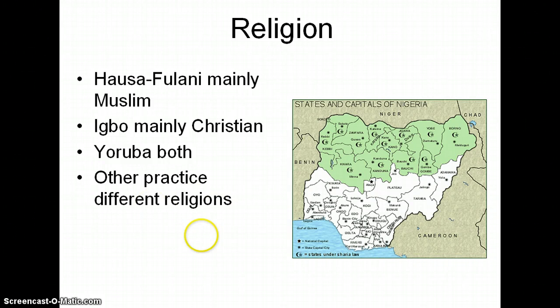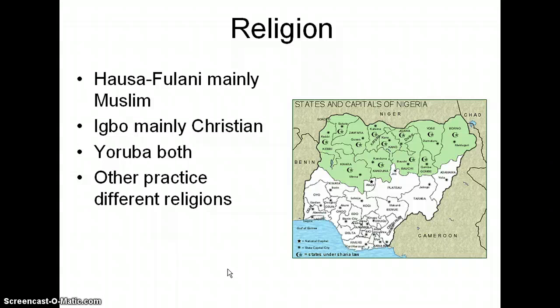Others practice different religions. This map shows states that are under Sharia law — all these green ones up here — which is a version of Islamic law inspired by the Quran and by the deeds and practices of Muhammad. You can get an idea that it's very firmly entrenched up there, and there's a terrorist group called Boko Haram that tries to spread Islam and Sharia law even to other areas and to all of Nigeria.